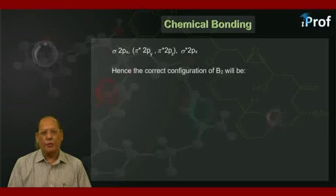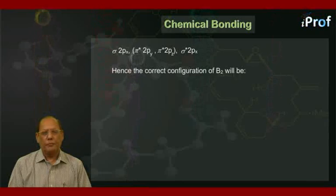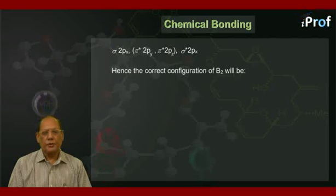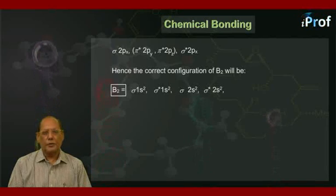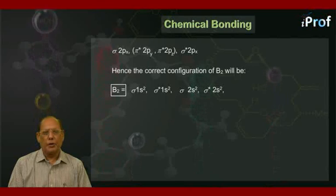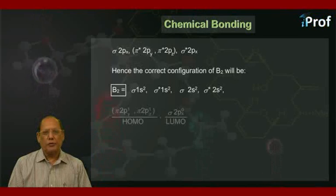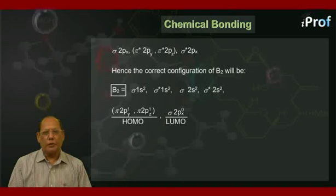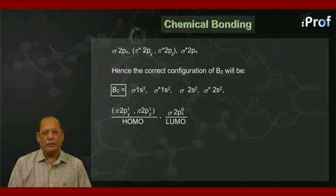Hence the correct configuration of B₂ molecule will be B₂ equal to, remember we have to fill up only 10 electrons, so this is σ1s², σ*1s², σ2s², σ*2s², π2pᵧ¹, π2pᵤ¹ as HOMO, and finally there is a LUMO level that is σ2pₓ⁰.